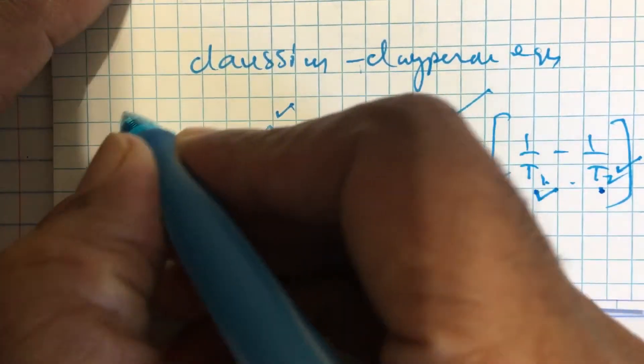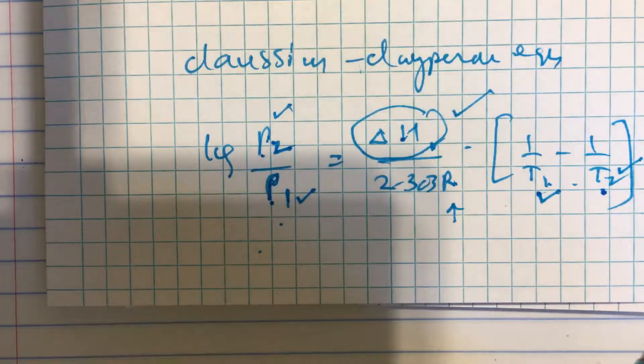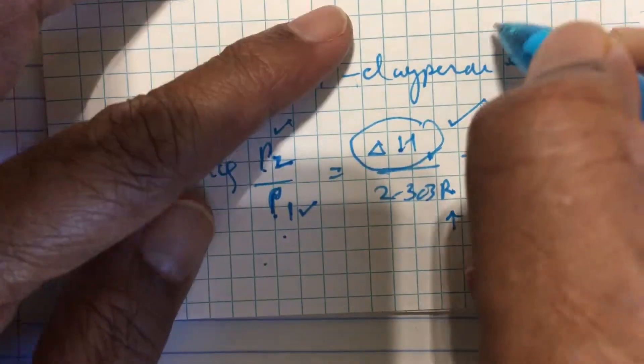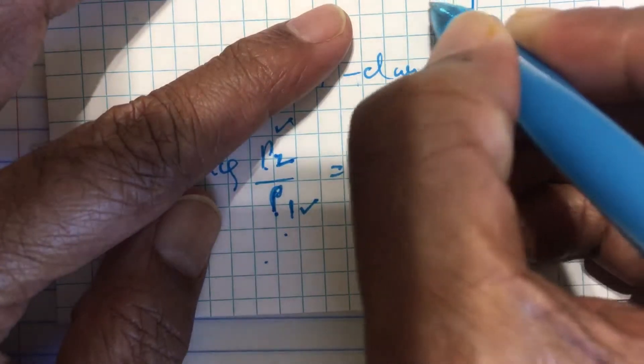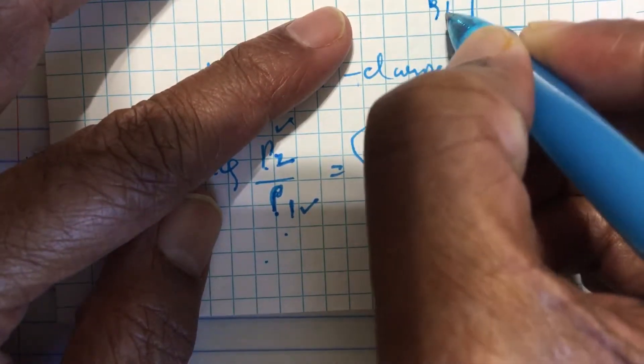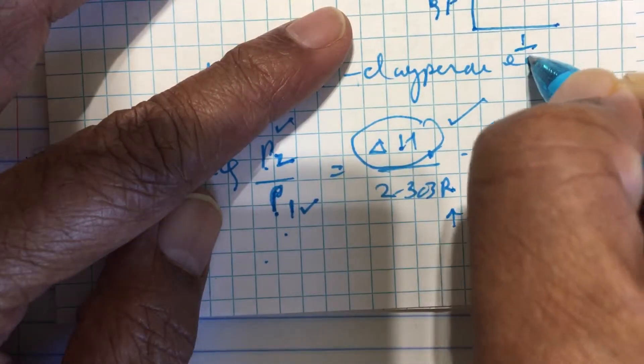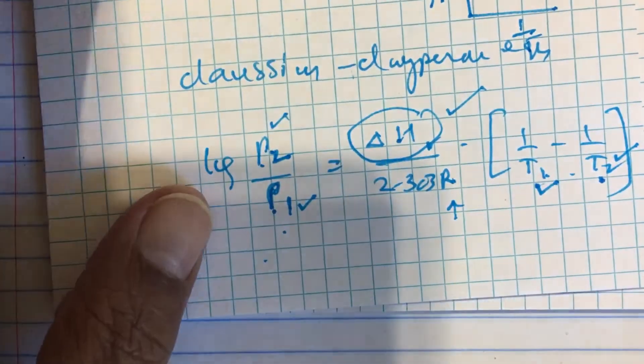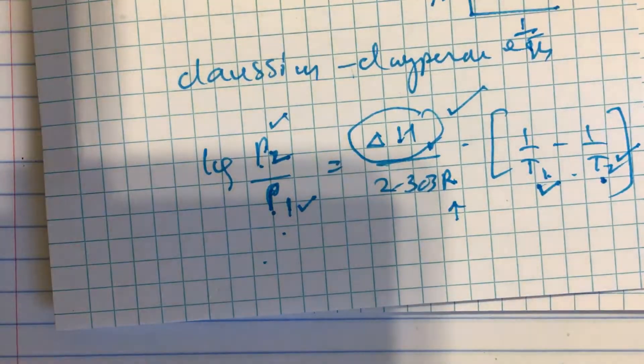A graph of log p versus 1 by T looks like this. Can you guess what is the slope of this?